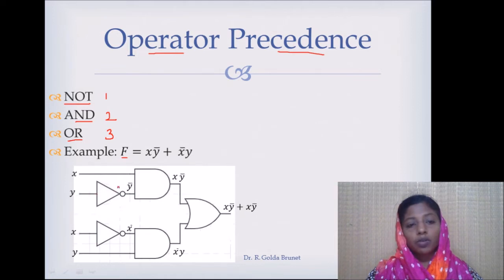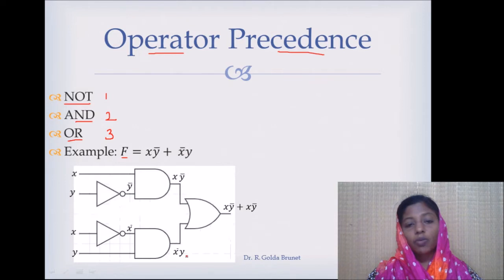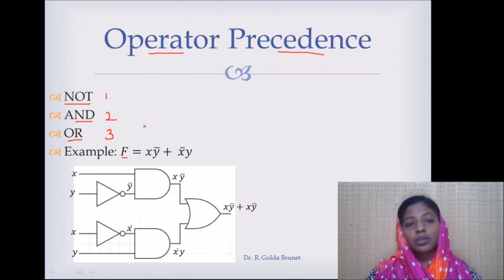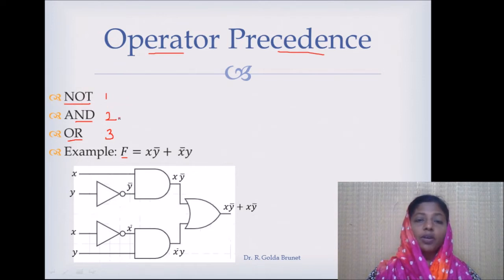We compute Y̅ first. Only if we have Y̅ can we compute the AND operation which is XY̅. That is why NOT operation gets the topmost priority. Then we compute the AND operation. Similarly, we compute X̅, then we compute the partial product X̅Y. And finally we compute the OR operation which is XY̅ plus X̅Y. So this is the order in which the operations will be evaluated. Given any Boolean function, NOT operation is evaluated first, followed by AND operations, and finally the OR operations.